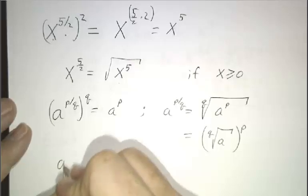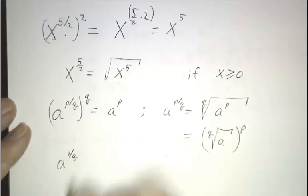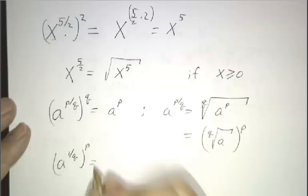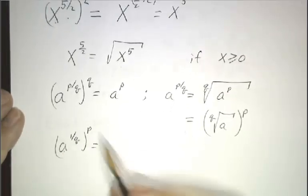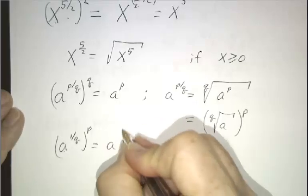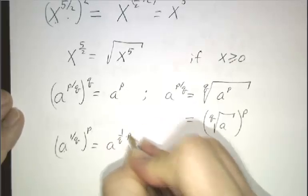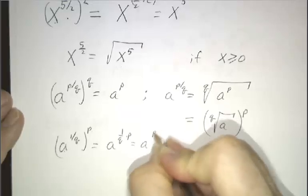It's also the qth root of a to the p. Because a to the 1 over q is the qth root. If you take that to the pth power, our law of exponents says a to the 1 over q to the p is a to the 1 over q times p, which is a to the p over q.